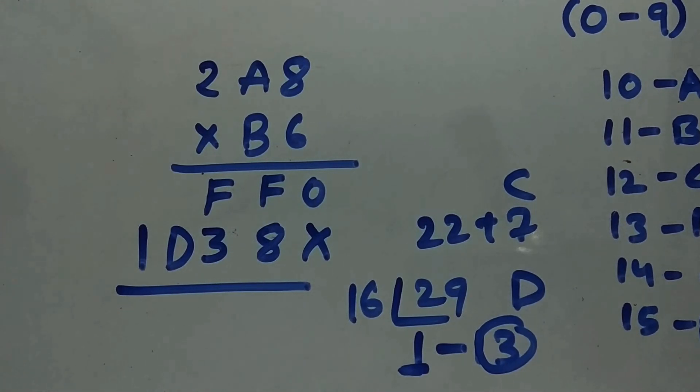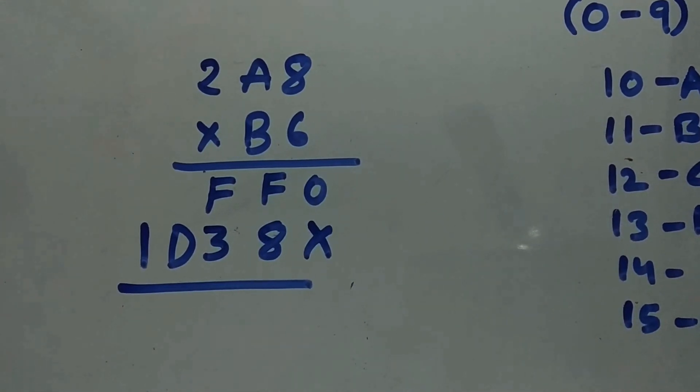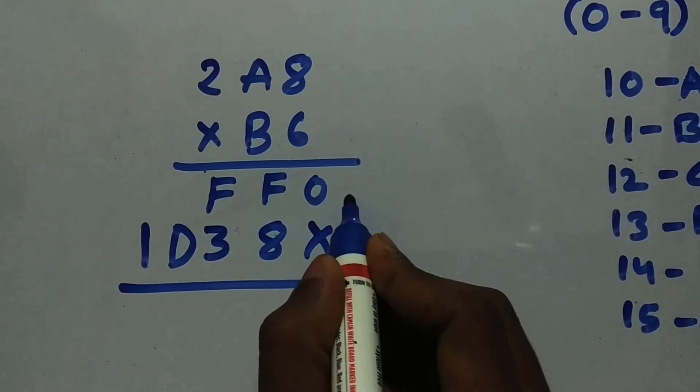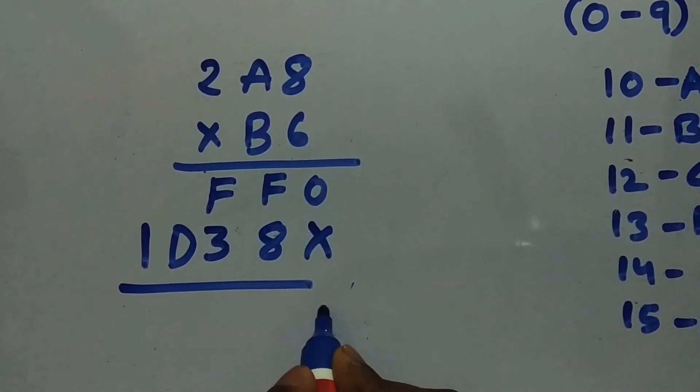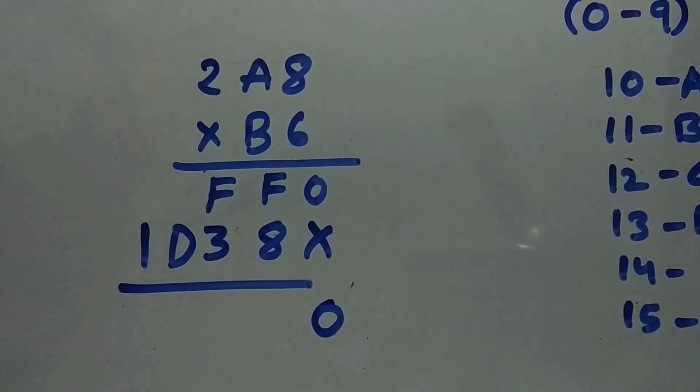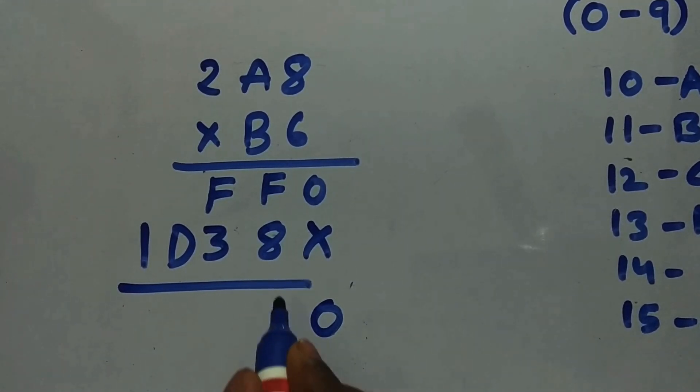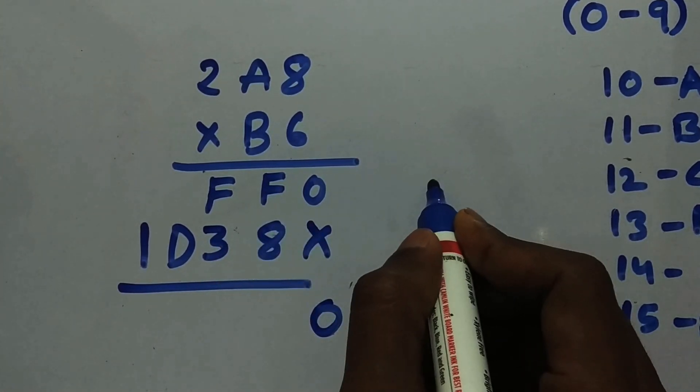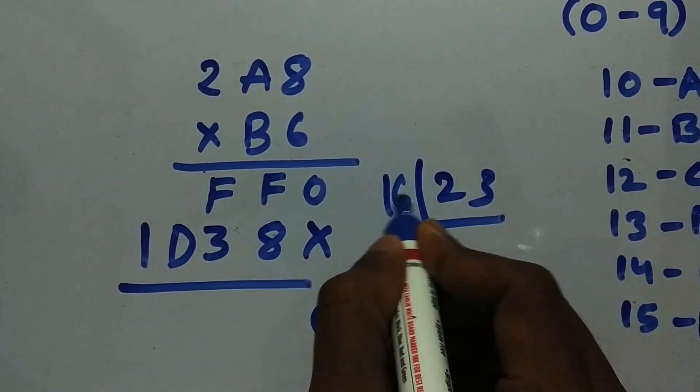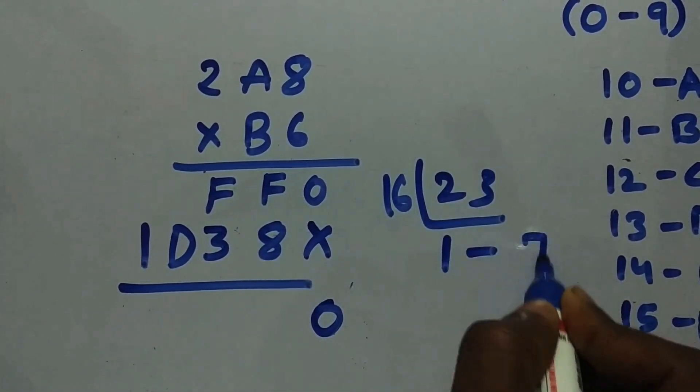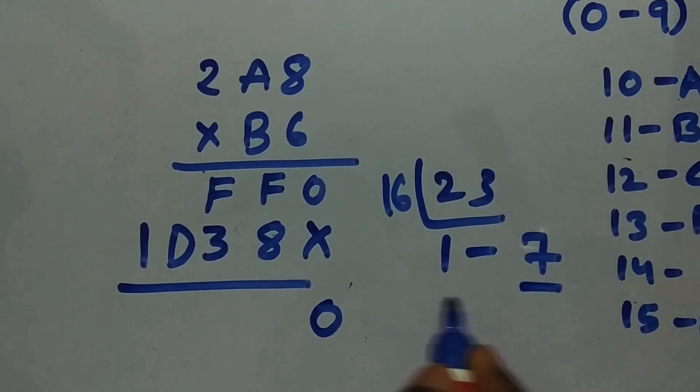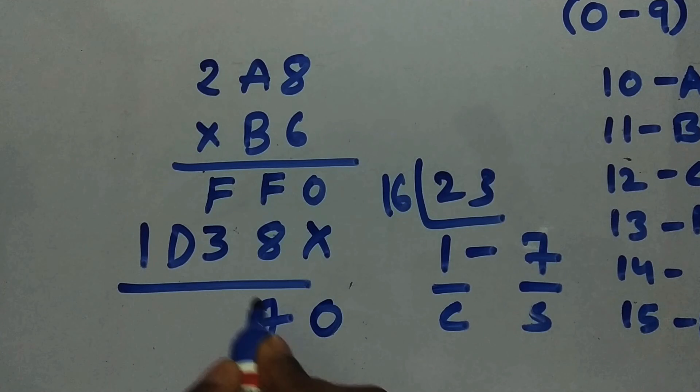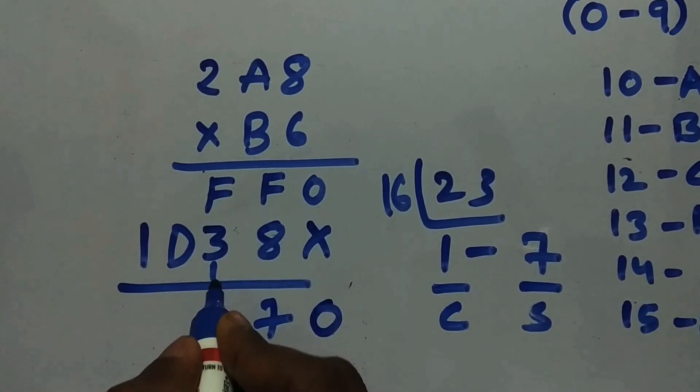After multiplying with each term, now we need to add both of them. We will add over here. Not like normal addition—we need to add in hexadecimal form only. F is 15, so 15 plus 8 is 23. 23 needs to be converted into hexadecimal. 16 times 1 and 7. So 7 is the sum and 1 is the carry.